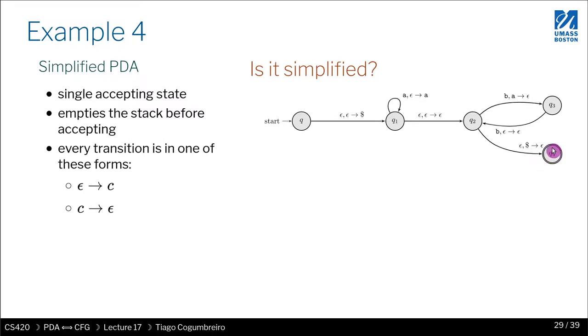What else do we do? Every transition is one of these forms. Either Epsilon C or C Epsilon. Let's see. Epsilon Epsilon. Uh-oh. This one is not. So this is not simplified. Just because of this one. So let's see if there are more.